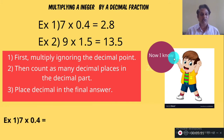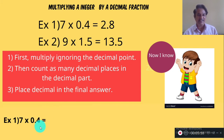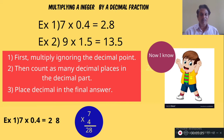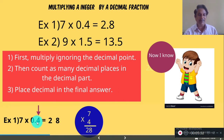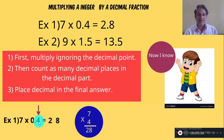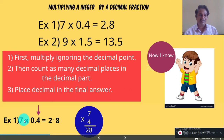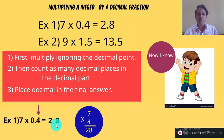Observe the example: 7 into 0.4. First, ignore the decimal point — so we get 4. Multiply 7 into 4, which is 28. Now place the decimal point: there is one decimal place in the decimal part, so the answer should also have one decimal place. So the answer is 2.8. Here 7 is the multiplicand, 0.4 is the multiplier, and 2.8 is the product.